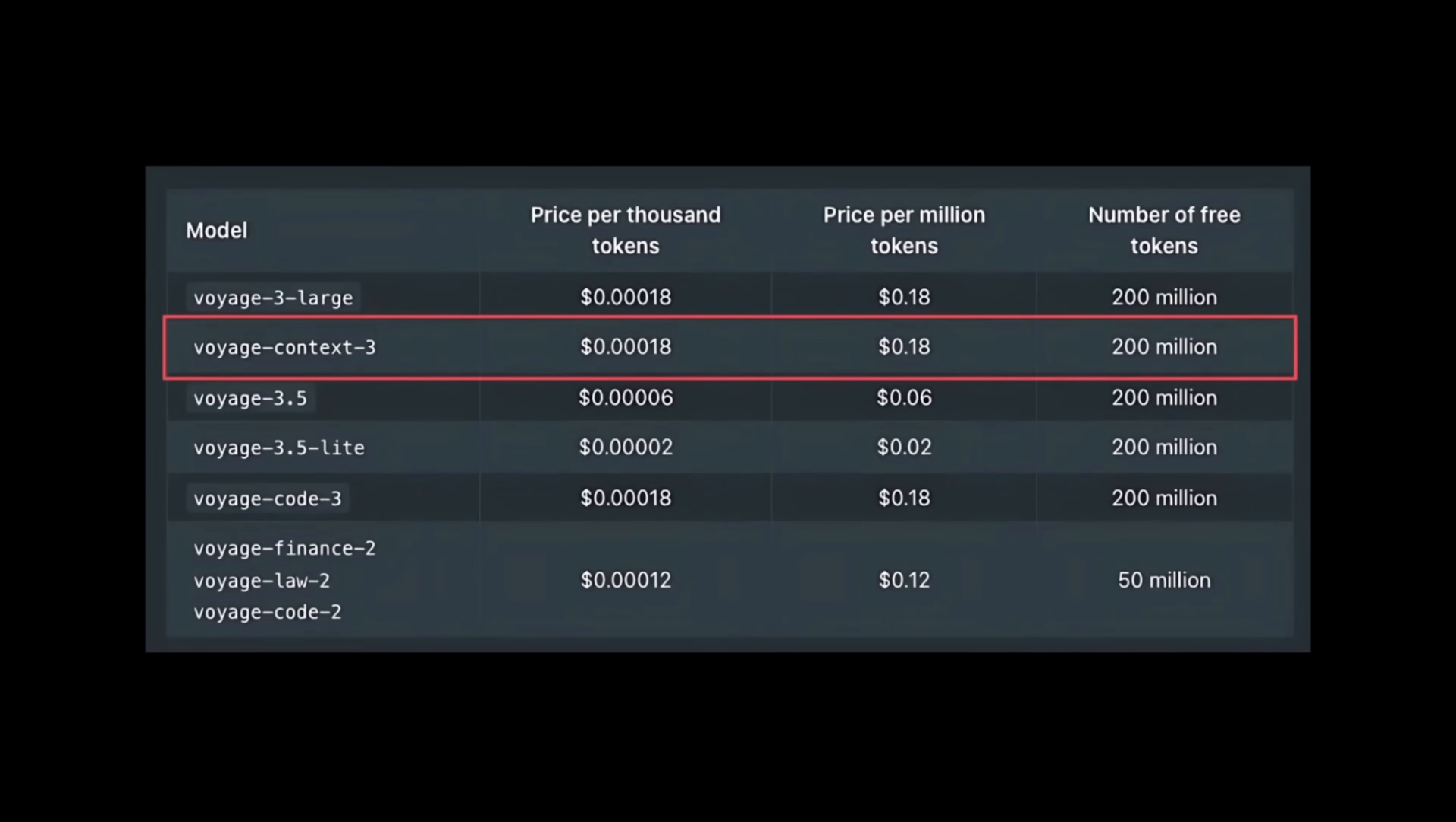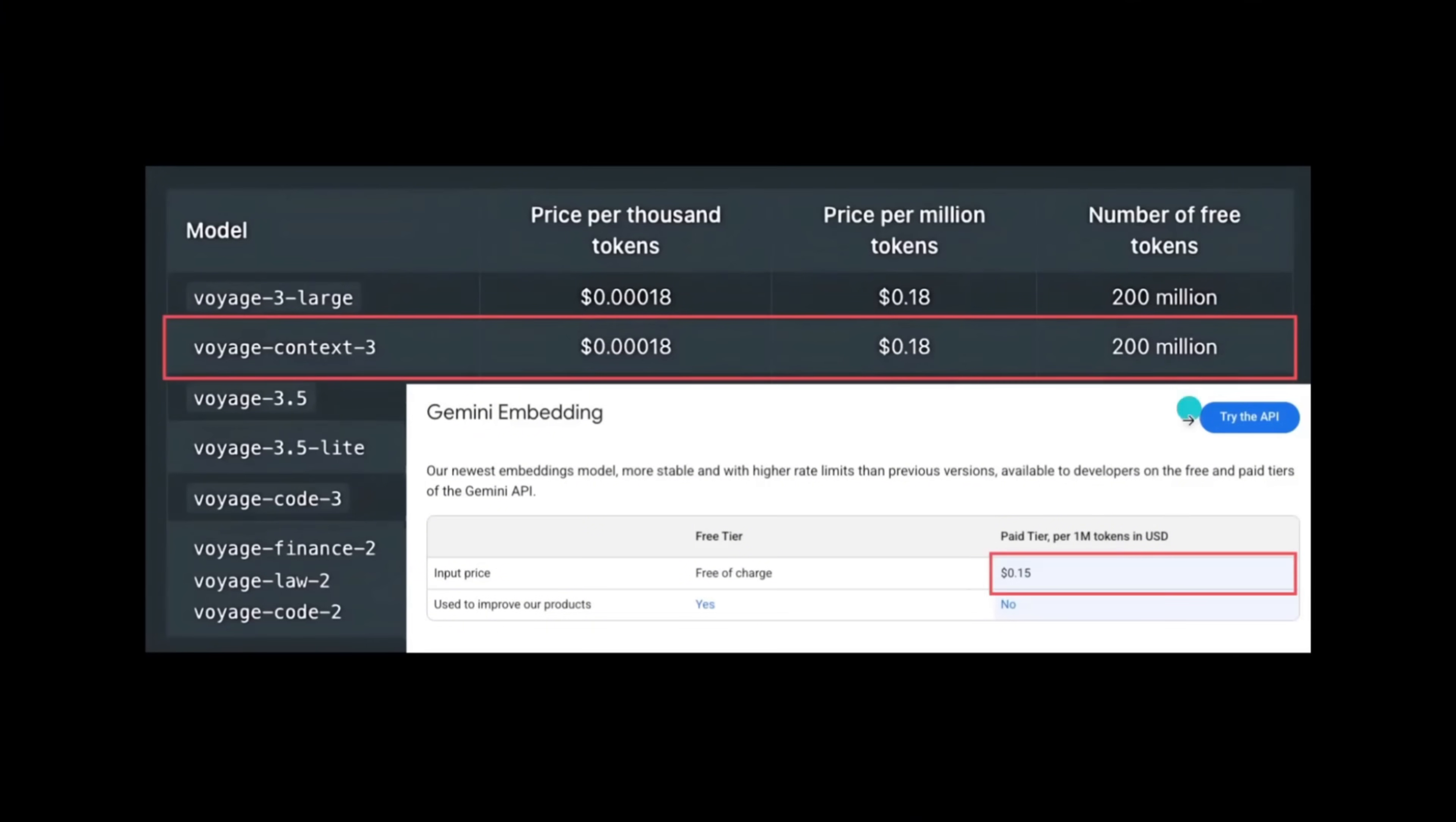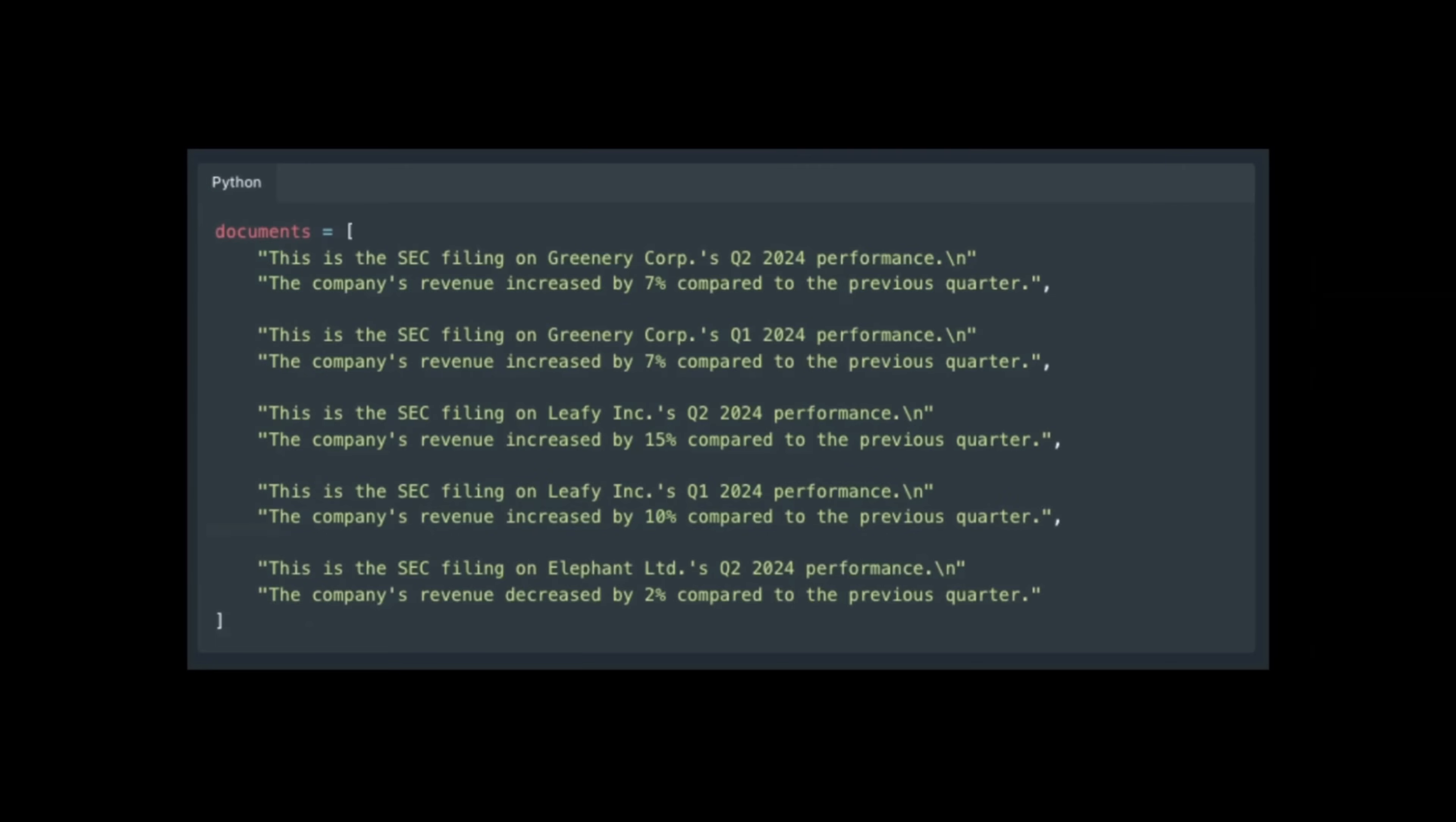Before showing you a code example, let me walk you through the pricing. So this is around 18 cents per million token. The first 200 million tokens are free. As a comparison, here is the Gemini embedding 001. This is their latest multimodal embedding, which is about 15 cents per million token.